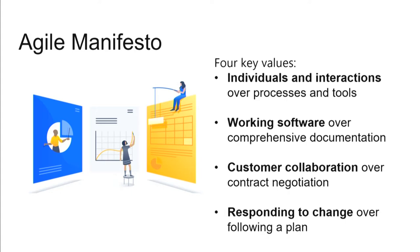Agile frameworks abide by four key values from the Agile Manifesto: individuals and interactions over processes and tools; working software over comprehensive documentation; customer collaboration over contract negotiation; and responding to change over following a plan. The other values are still important, but in Agile we are more focused on delivering value to the end user in small increments and in a fast manner — that is the literal meaning of Agile: being quick and reliable.